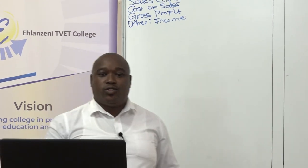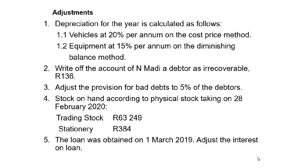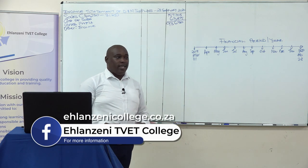We need to check our adjustments. The first adjustment has to do with depreciation. The second one has to do with bad debt. The third one has to do with the provision for bad debt. If the provision for bad debt becomes an income, it goes under incomes; if it results in an expense, it goes to expenses.